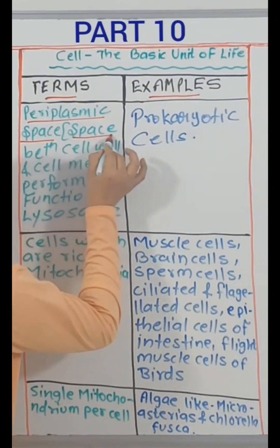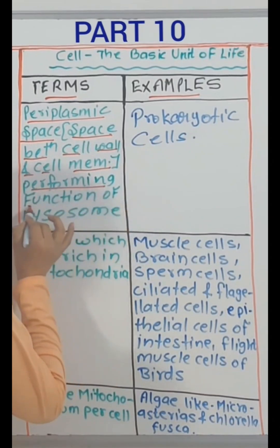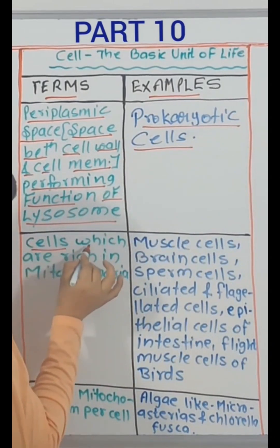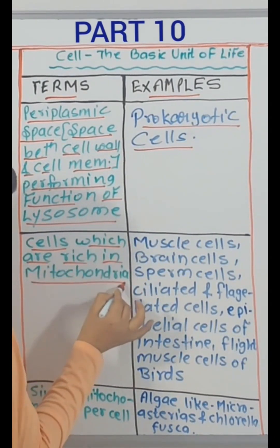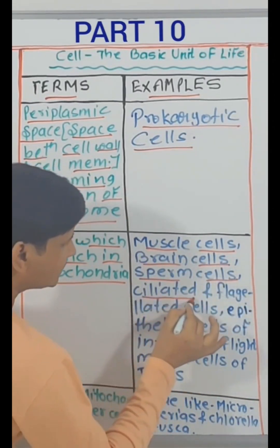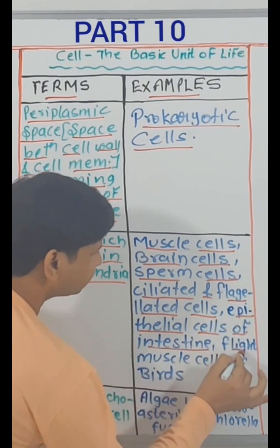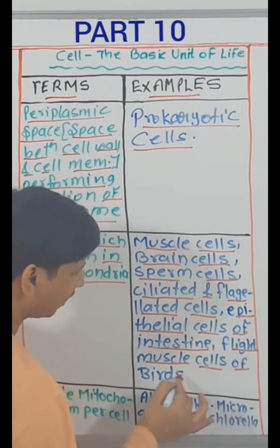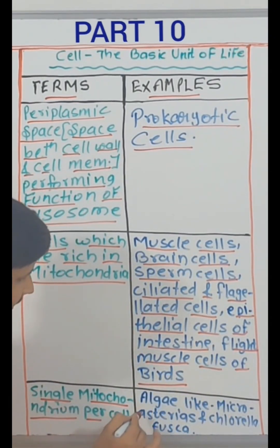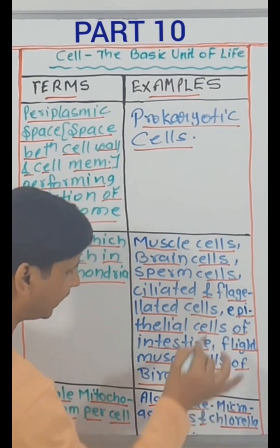Periplasmic space — that is space between cell wall and cell membrane performing function of lysosome — prokaryotic cells. Cells which are rich in mitochondria: muscle cells, brain cells, sperm cells, ciliated and flagellated cells, epithelial cells of intestine, flight muscle cells of birds. Single mitochondrion per cell — algae like Microsterias and Chlorella fusca.